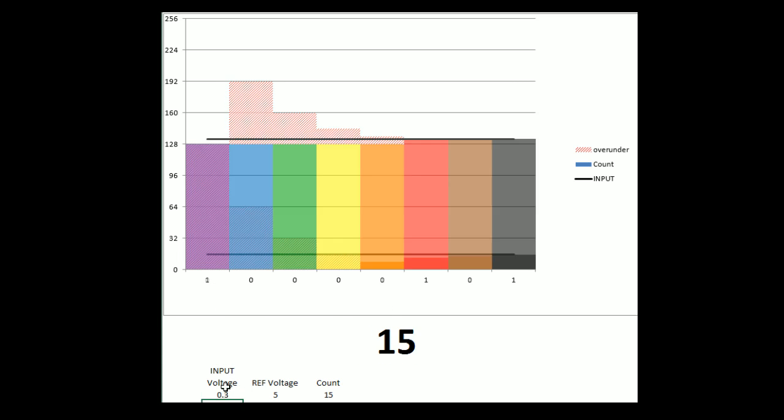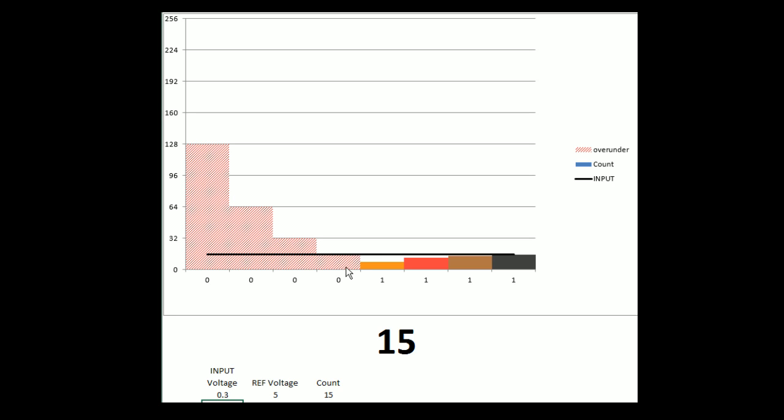So if I were to give it 0.3 volts, you'd see it hunt down and then start hunting back up. Now this takes eight clock cycles to do, but it takes the same amount of time every time. For an eight-bit SAR, it takes eight clock cycles.